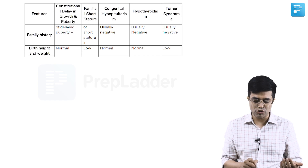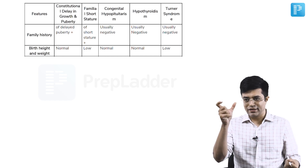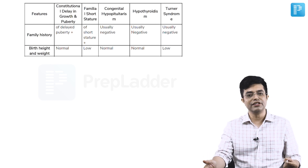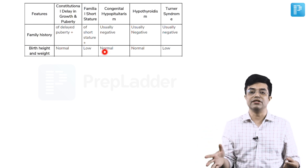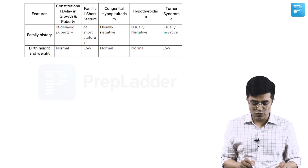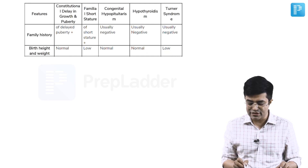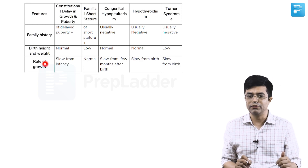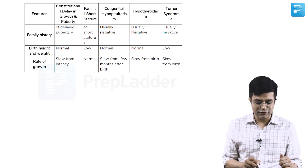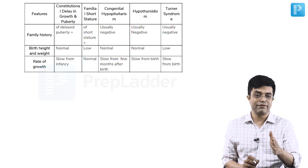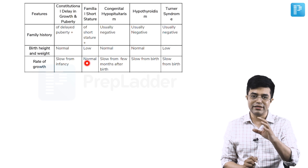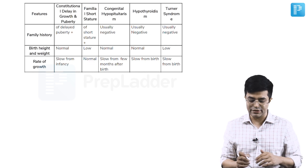In constitutional delay in growth, there is a delayed growth velocity which leads to these children developing short-stature in the post-infancy stage. Congenital hypopituitarism and hypothyroidism will have a normal birth height and weight, whereas in Turner syndrome, children are often found to have a low birth weight. The rate of growth will be slow from infancy — till infancy these children grow normally, then there is a delayed gap in the first few years after infancy.